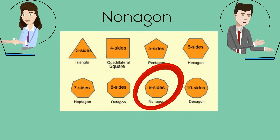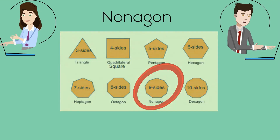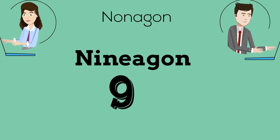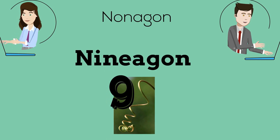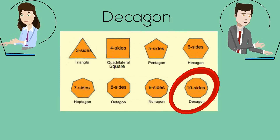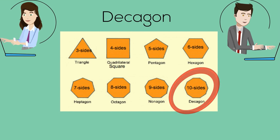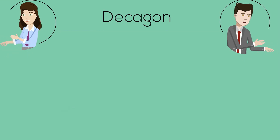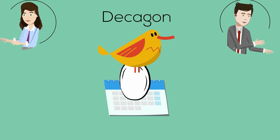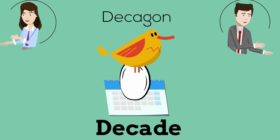A 9-sided polygon is a nonagon. A nonagon sounds like a nineagon, so imagine a big nine on a vine. And a 10-sided polygon is a decagon, so think of a hen sitting on an egg on a calendar for a decade, which is ten years.